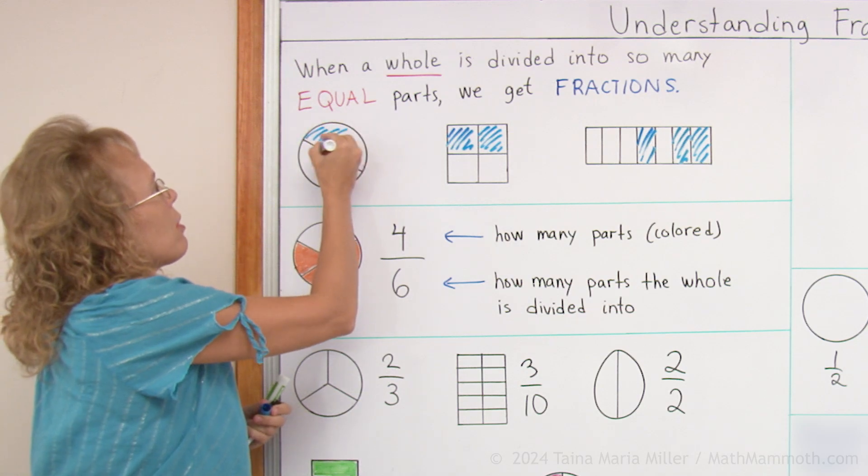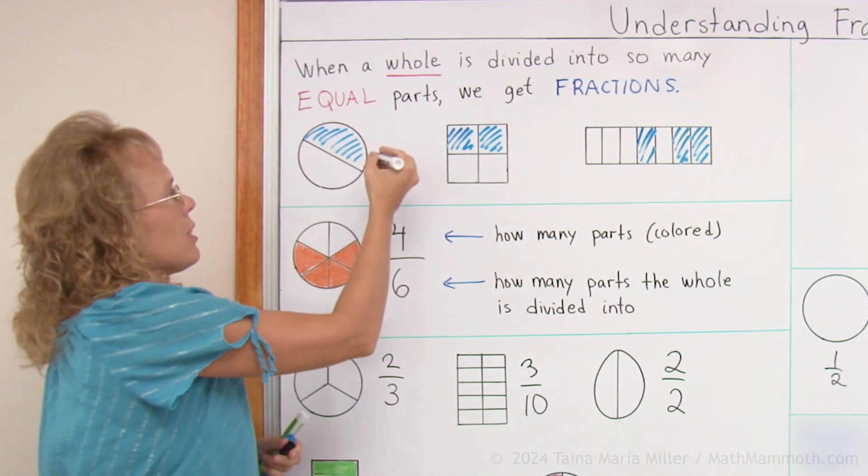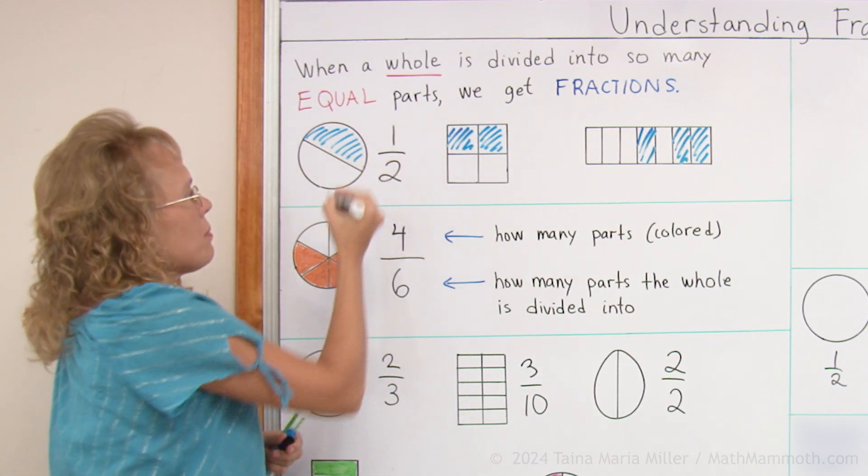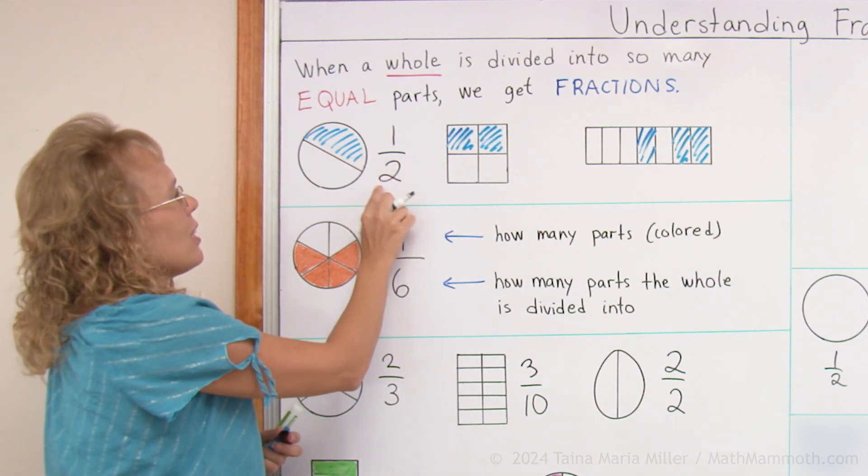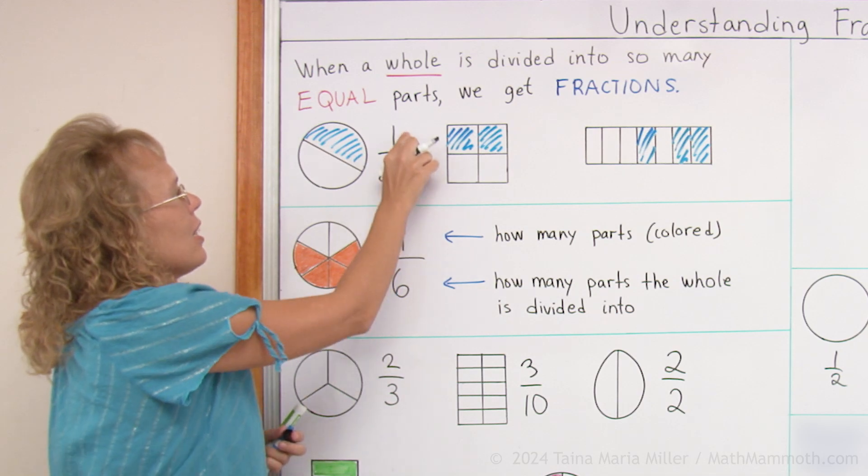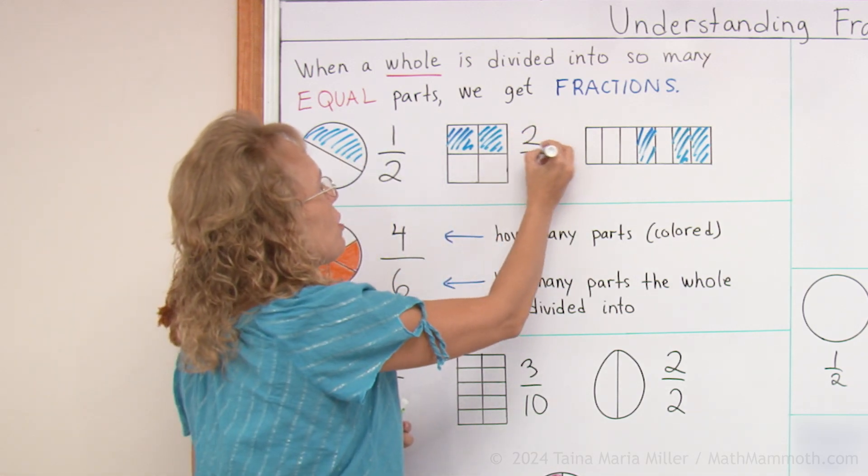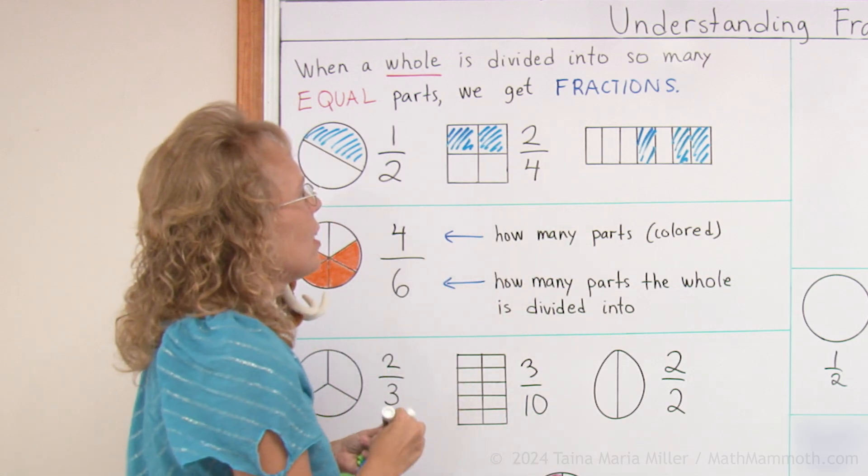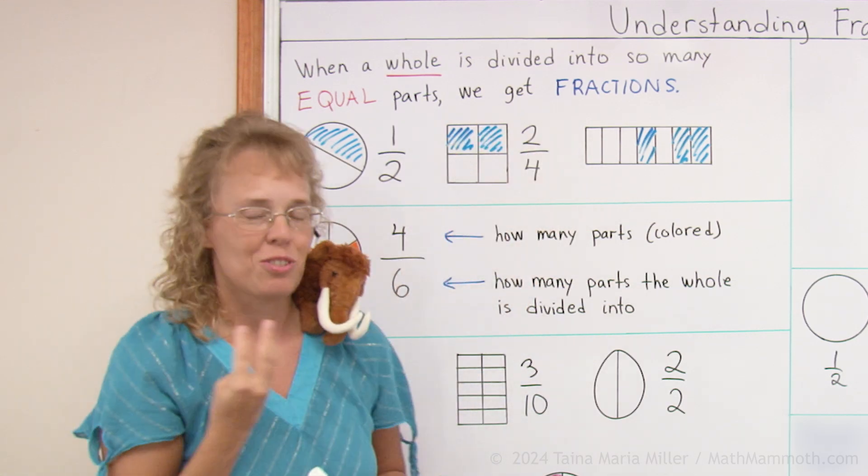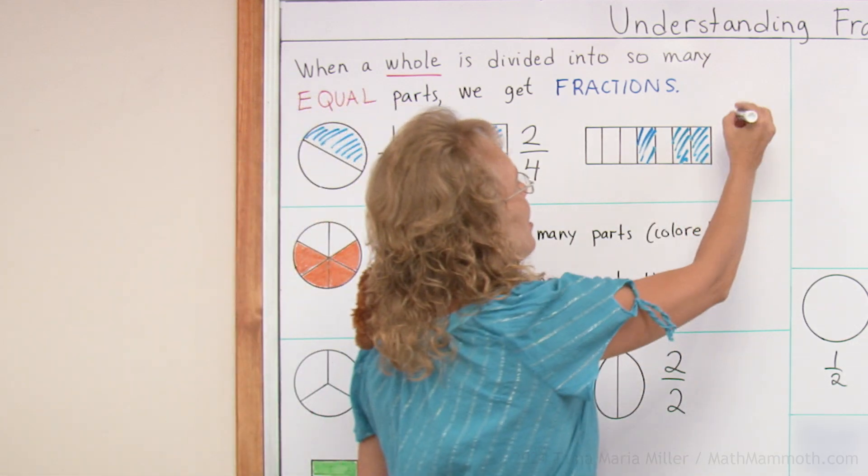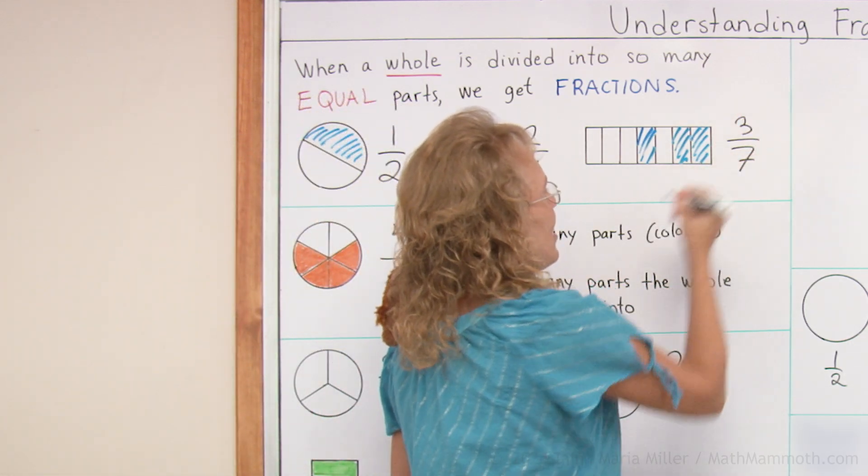Here I was talking about the one half. It's written like this. And that is because we have two parts in total. It is divided into two equal parts and I colored one. And here two fourths, like that. There are two parts that are colored and four in total. It was divided into four equal parts. And then three sevenths like that.